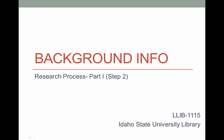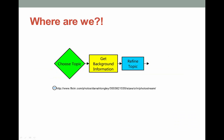You should have a couple of topics or an area of interest in mind. Now we need to learn a bit more about these so we can choose a direction for our research. We're still talking about the first part of the research process, but we are focusing now on the second step: getting background information.